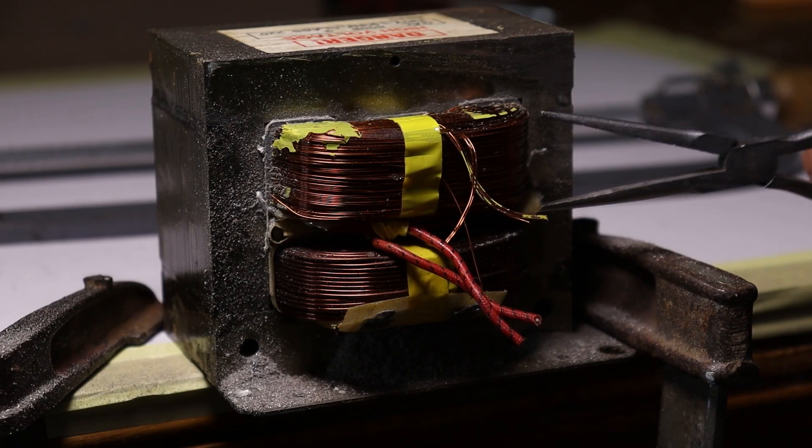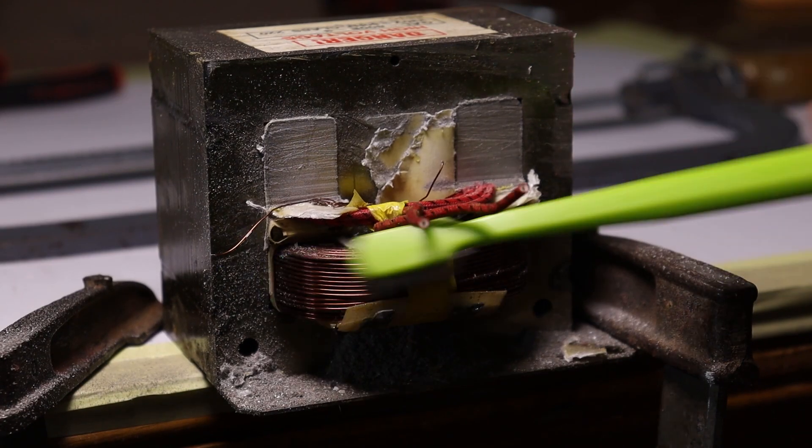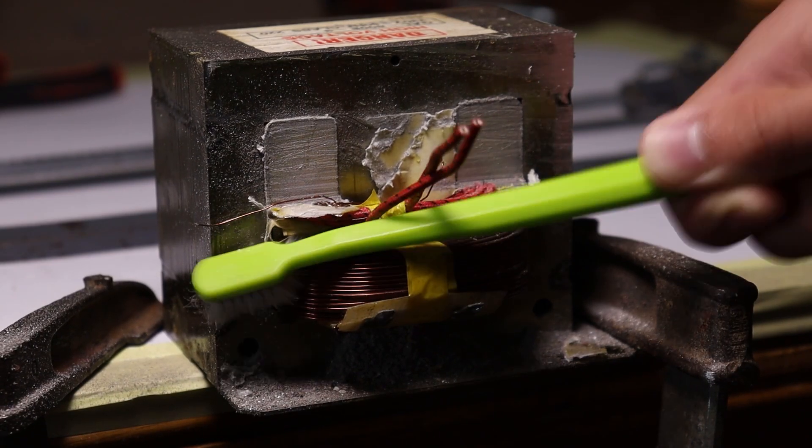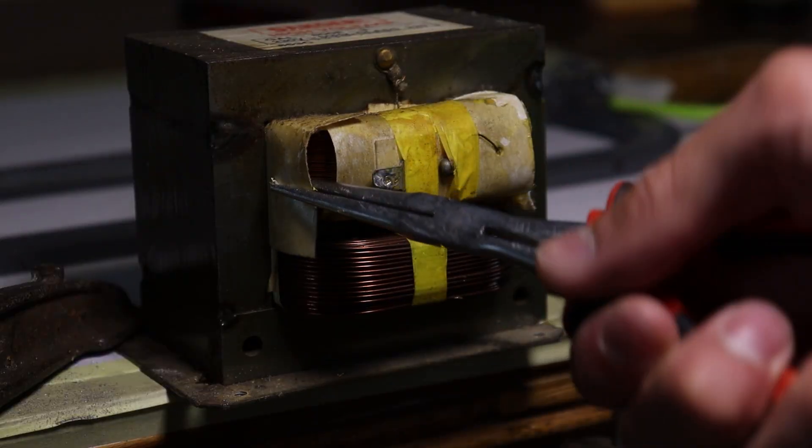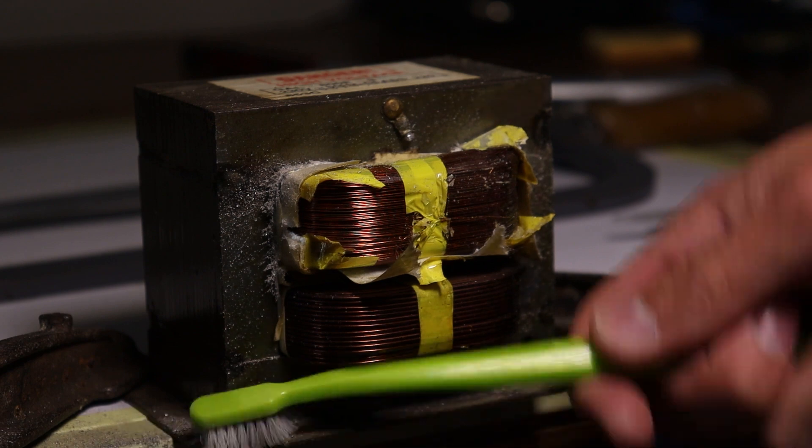And with some help of the other tools like pliers, cutting pliers, and my sister's toothbrush, I cleaned and removed any leftover parts of secondary winding. Later on, cleaning, cutting, and brushing was then repeated for the backside of the transformer's secondary winding.